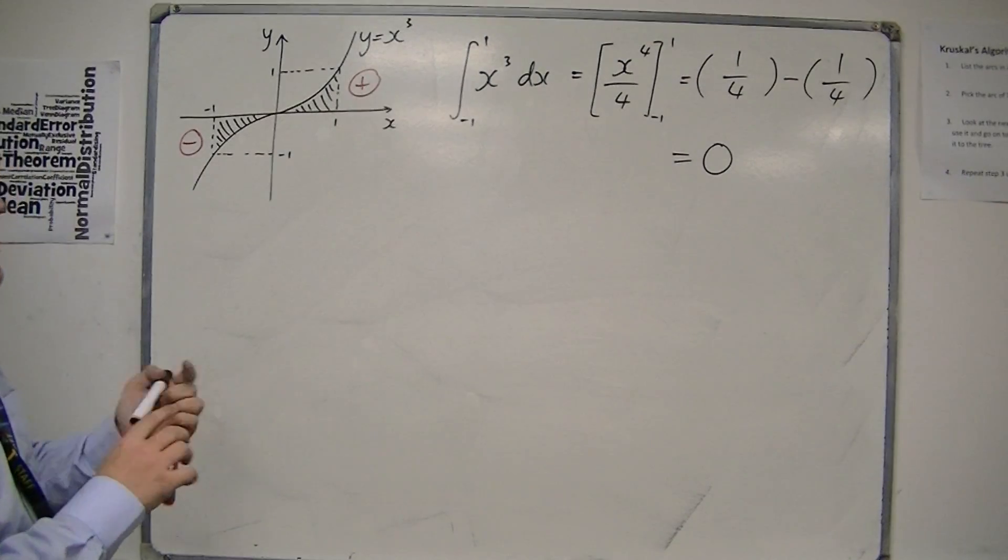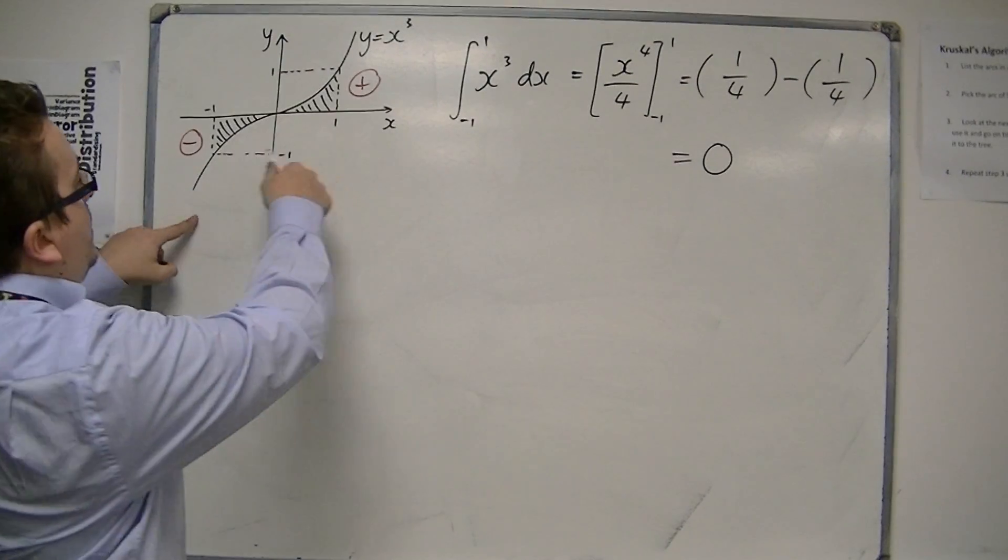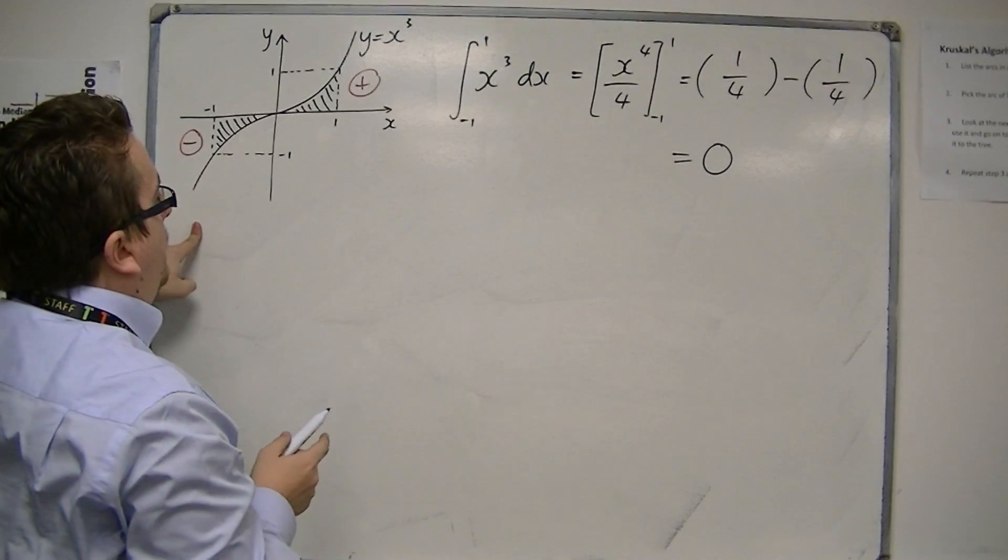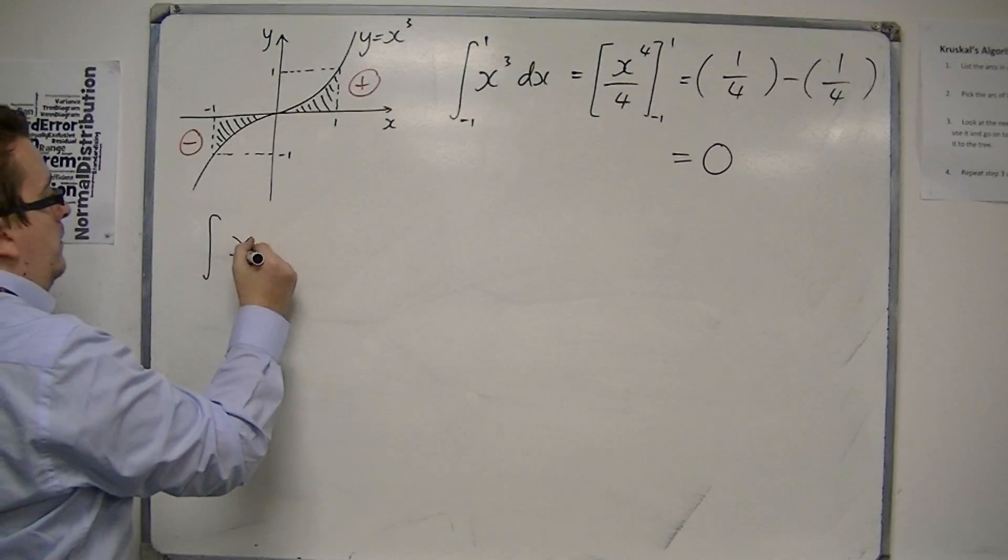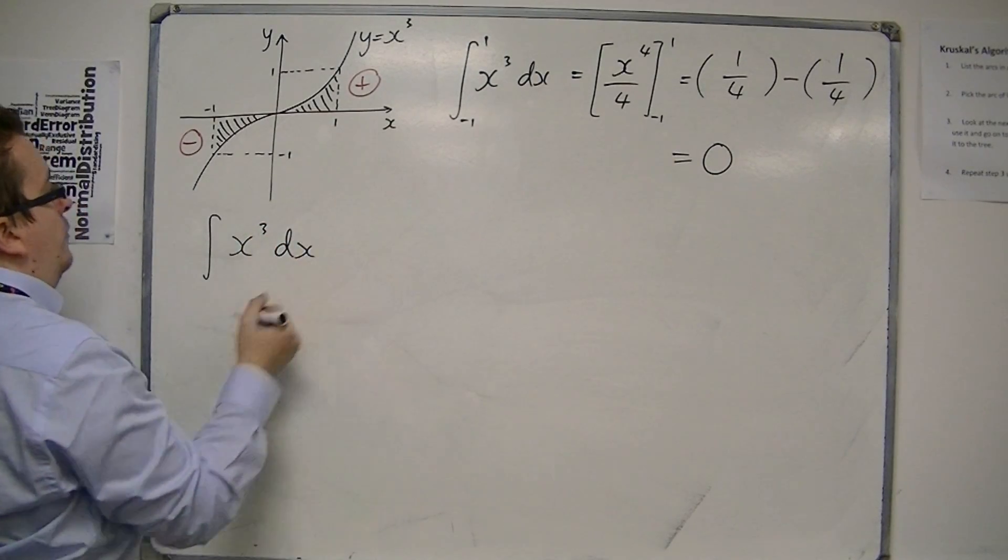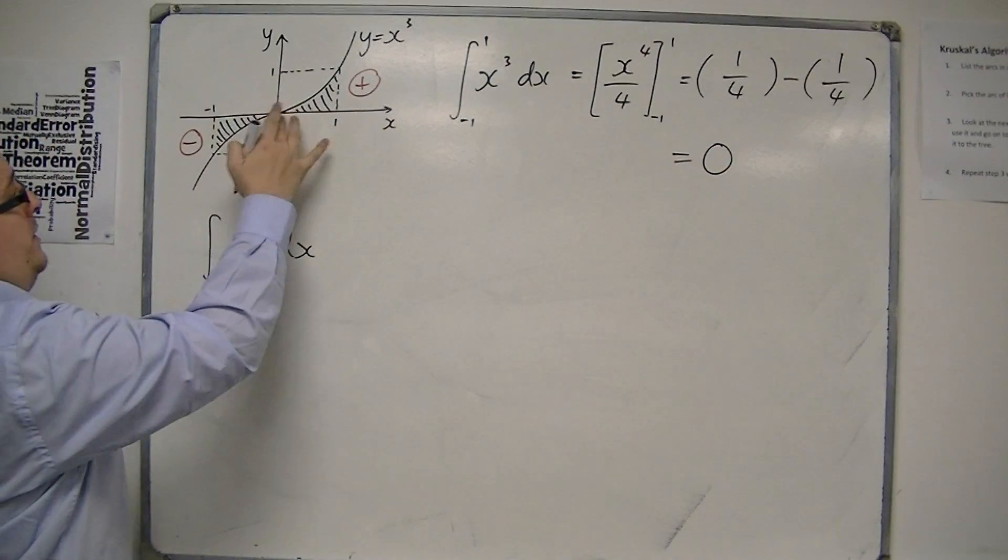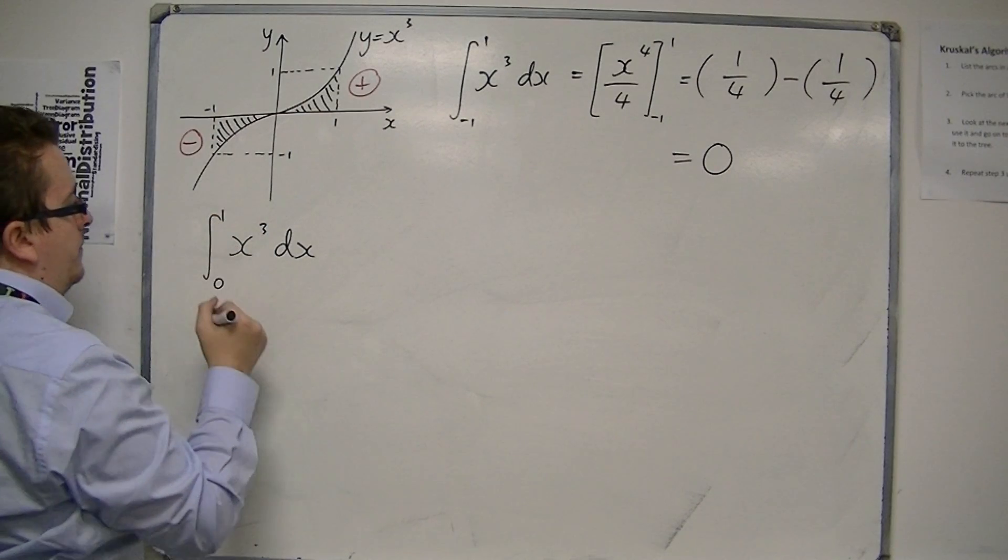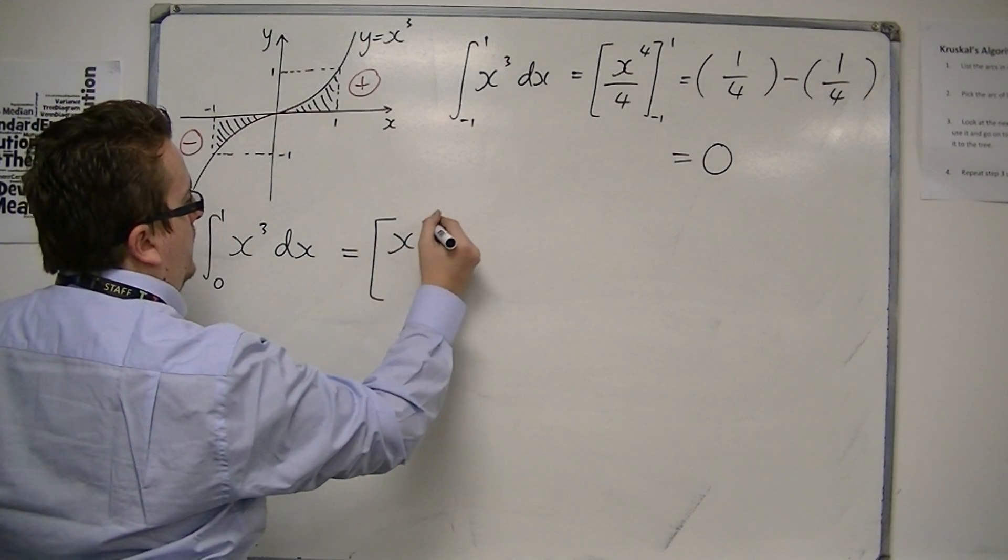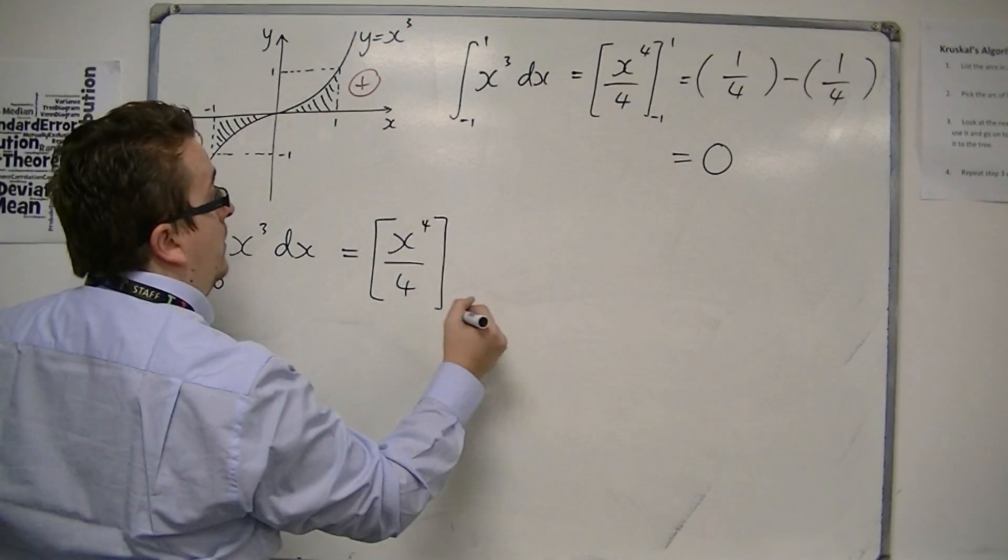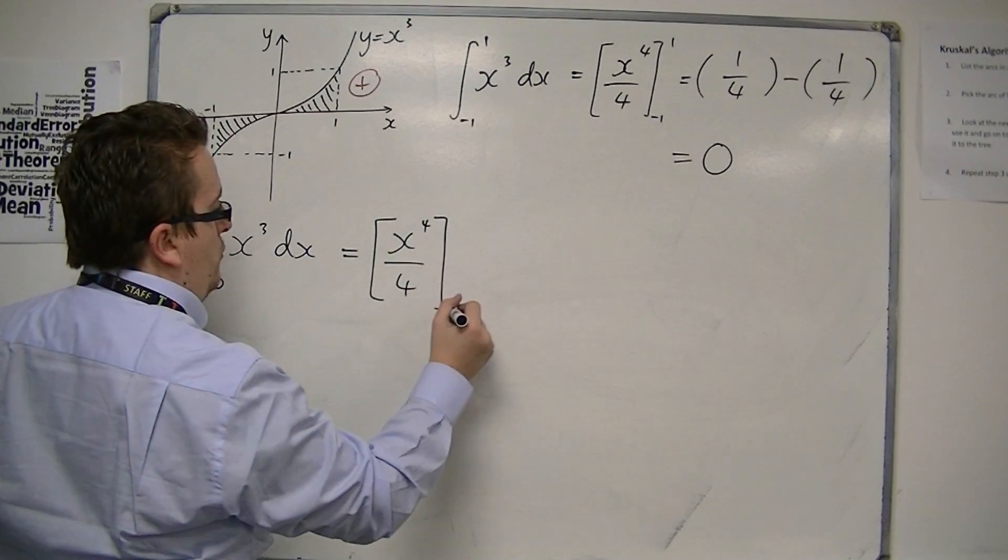And so if I needed to work out what the overall area is, I would first find the area between 0 and 1. So from 0 to 1.